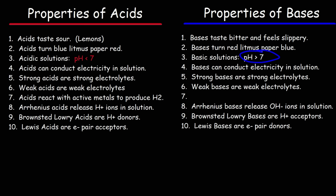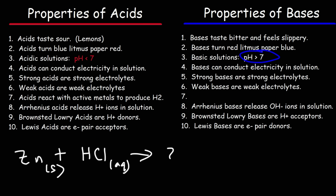Acids react with active metals to produce hydrogen gas. For example, zinc metal reacts with aqueous HCl to produce aqueous zinc chloride and hydrogen gas. Not all metals react with acids — only active ones such as zinc, aluminum, iron, and nickel. Copper, silver, and gold are not active metals and don't react with acids to produce hydrogen gas.